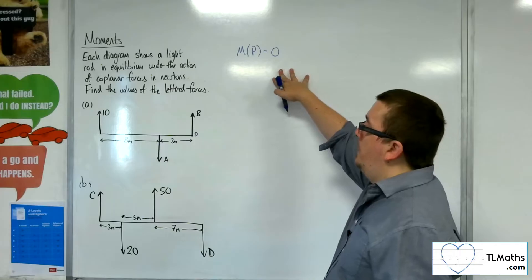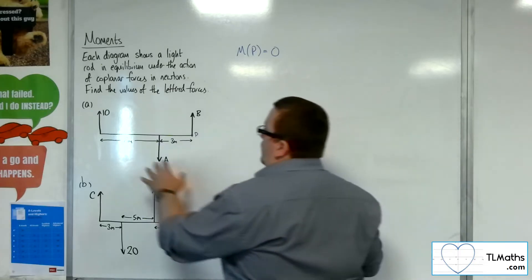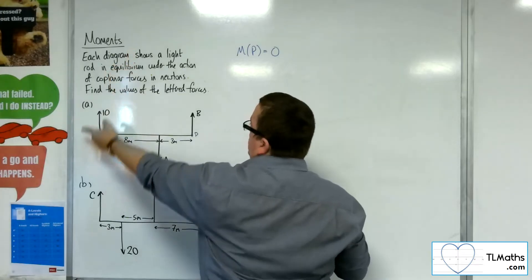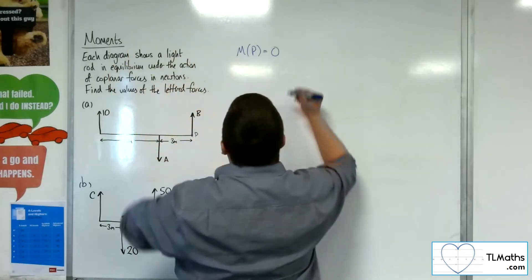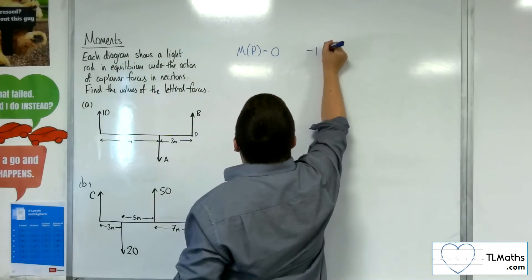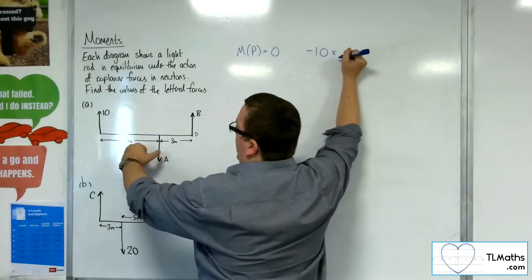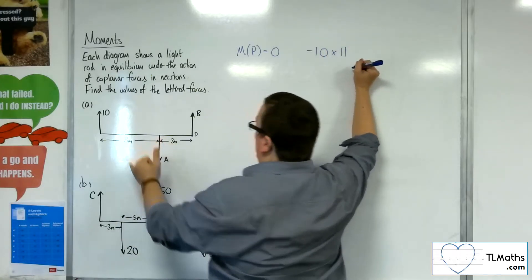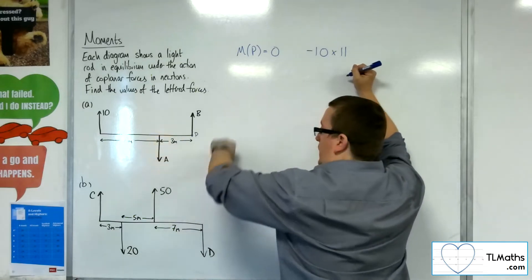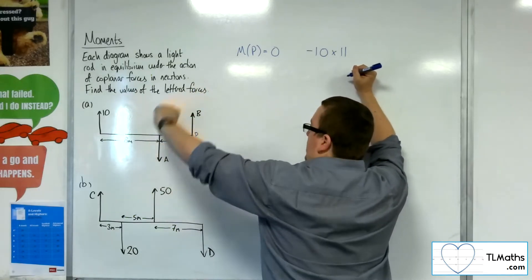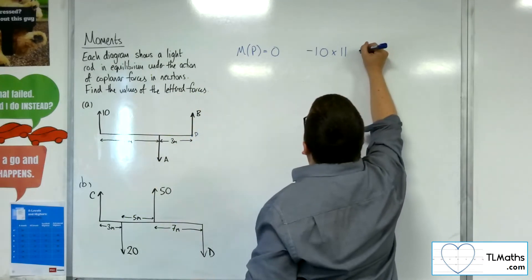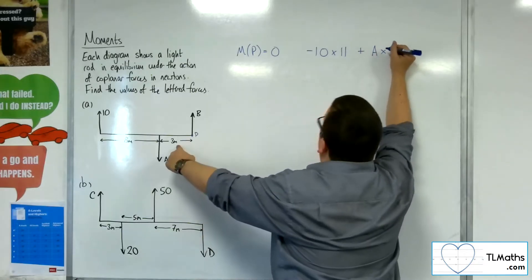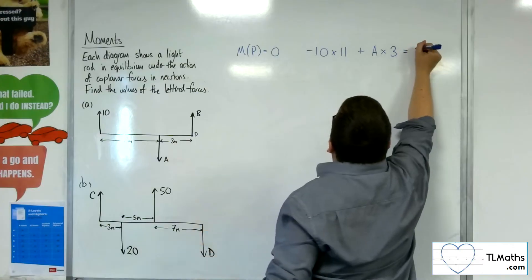Taking moments about P: the 10-newton force is going clockwise, so that gives minus 10 times its distance from P, which is 8 plus 3, so 11. Then A is going anticlockwise, so that's positive — plus A times its distance from P, which is 3. The total must equal zero.